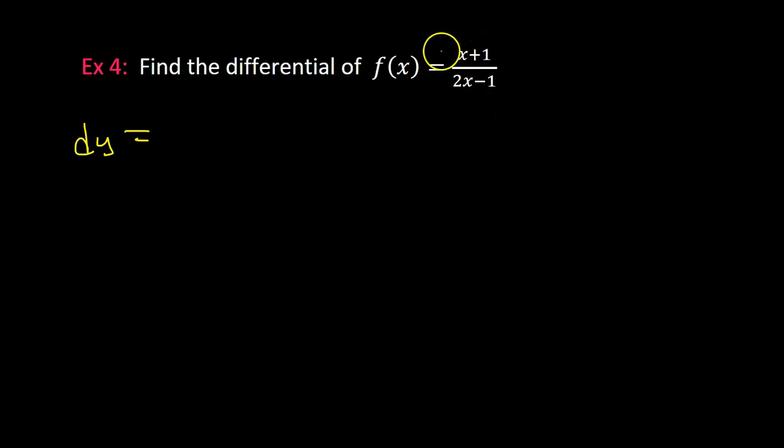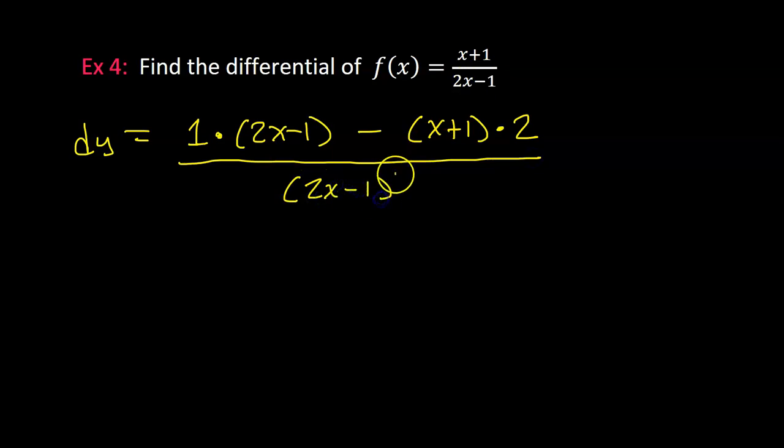For the quotient rule, we take the derivative of the numerator, which in this case is just going to be 1, and then you multiply that by the denominator, which is 2x minus 1. And then you subtract, and you go through again. But this time, you leave the numerator alone, and you multiply by the derivative of the denominator, which in this case will be 2. So then you divide that entire expression by the denominator squared. So you do 2x minus 1 squared.